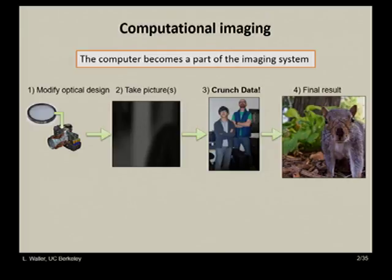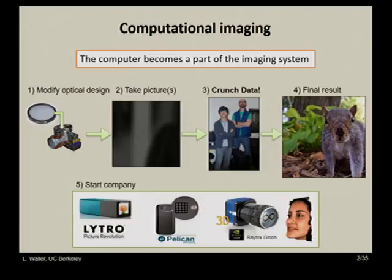I work near Silicon Valley, so step five is start a company. Elytra is my colleague Ren Eng's company. Pelican Imaging just got a lot of money from Qualcomm — I don't know if it's going to happen, but camera arrays on your cell phone are coming.